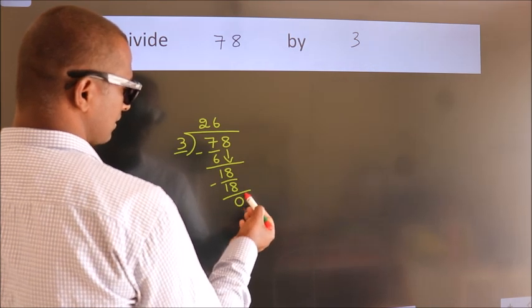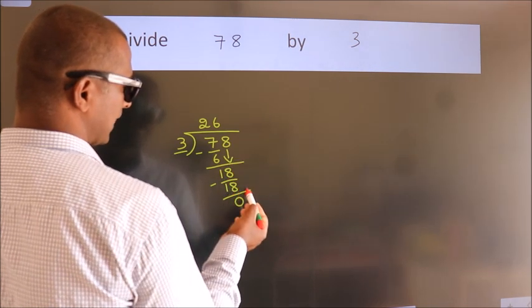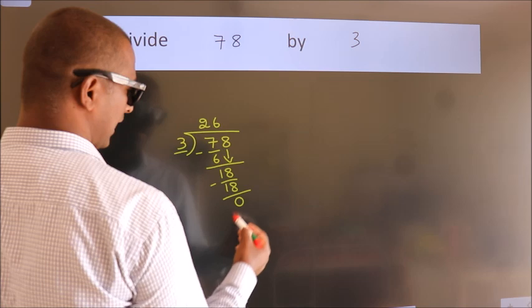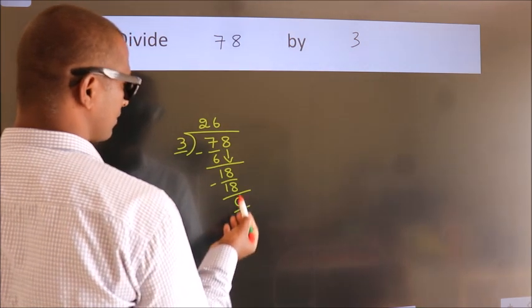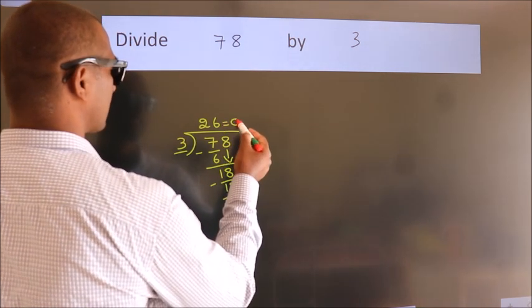After this, no more numbers to bring it down. And we got remainder 0. So this is our quotient.